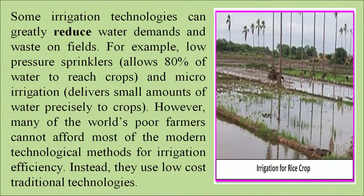Rice, as you must know, in its early phases of growth requires a lot of water. But we can reduce the amount of water required in our agricultural fields. For example, pressure sprinklers allow 80 percent of water to reach the crops, and micro-irrigation delivers small amounts of water precisely to the crop. However, many of the world's poor farmers cannot afford modern technology methods and therefore revert to low-cost traditional technologies.